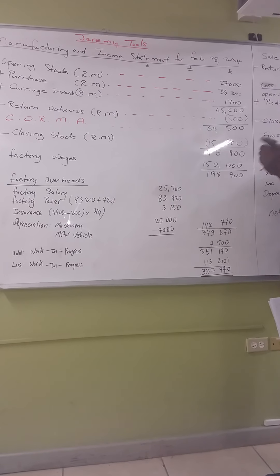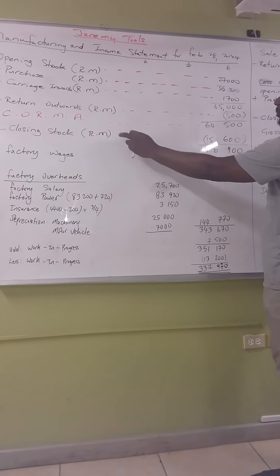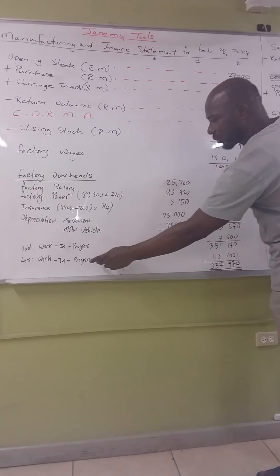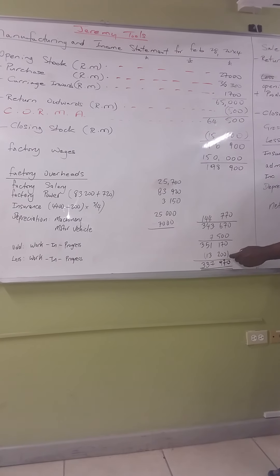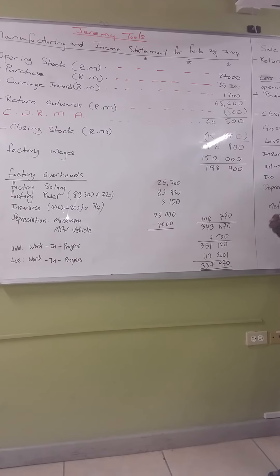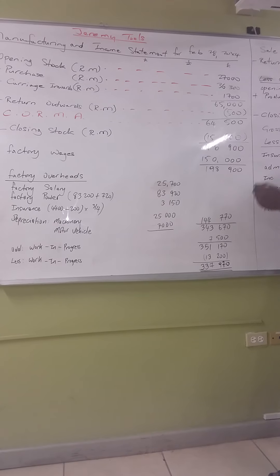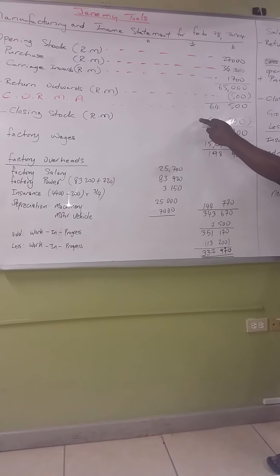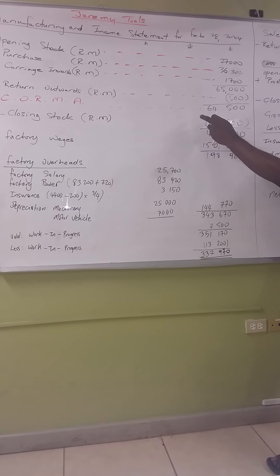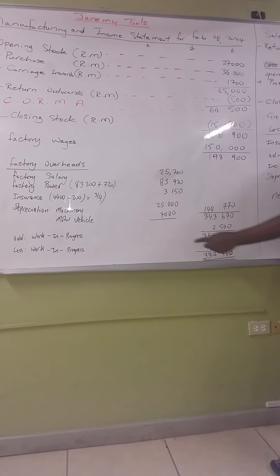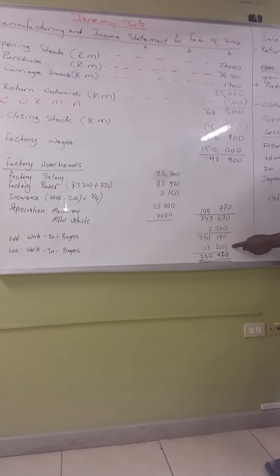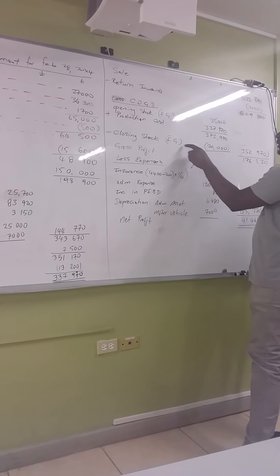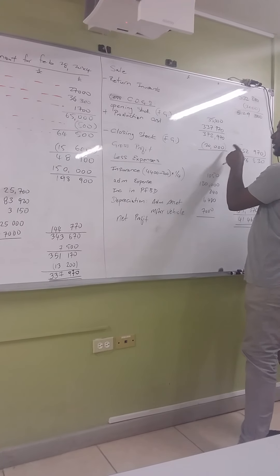The question should include closing stock of raw material: 15,600. It should also include closing work in progress: 13,200. These figures are on the board but were not in the question — they were accidentally left out. There was also closing stock of finished goods which was 20,000. You would have been notified.